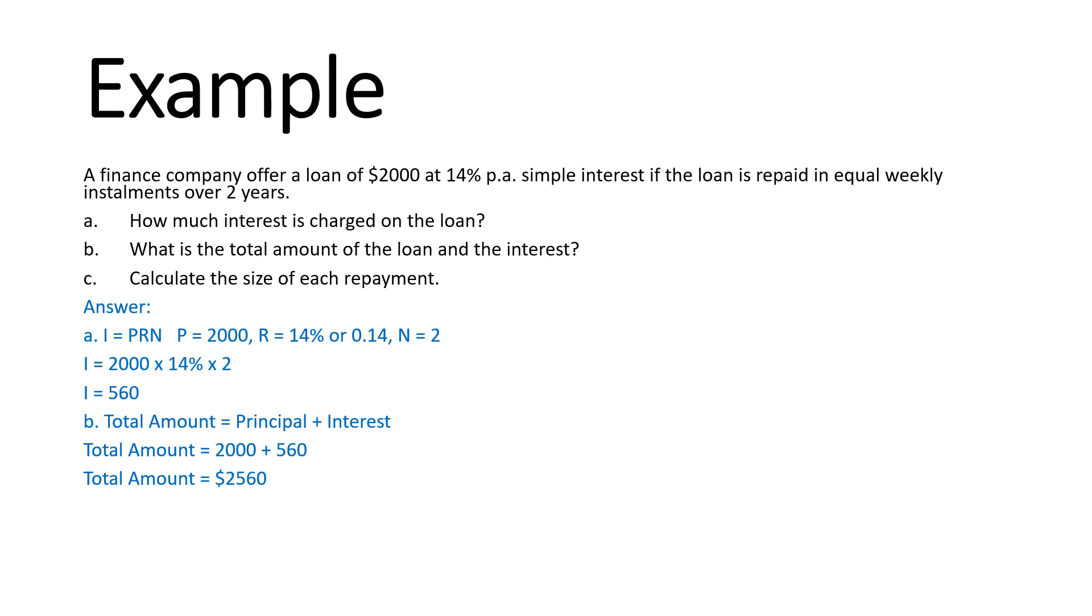Part C, calculate the size of each repayment. In the question, it says that the loan is to be repaid in equal weekly installments over two years. So two years equals 2 times 52, which equals 104 weeks. So there'll be a repayment every week for 104 weeks. We divide the total amount of the principal plus interest, so 2,560 divided by 104, and that will equal $24.62 per week.